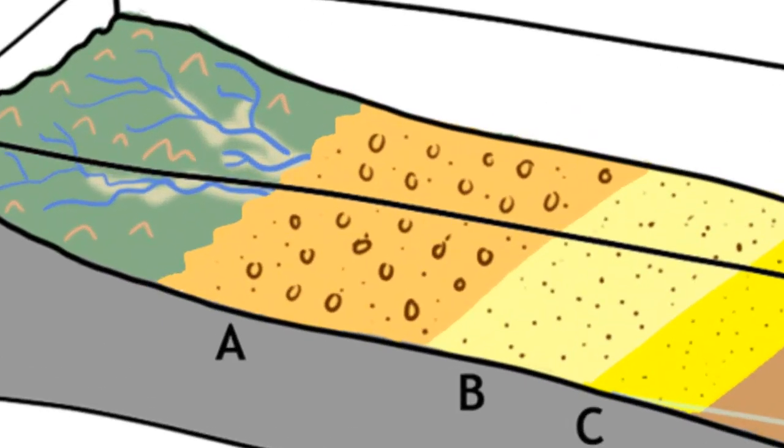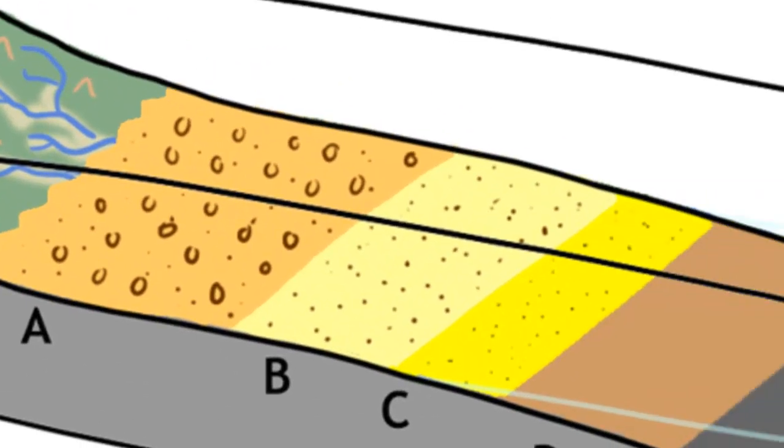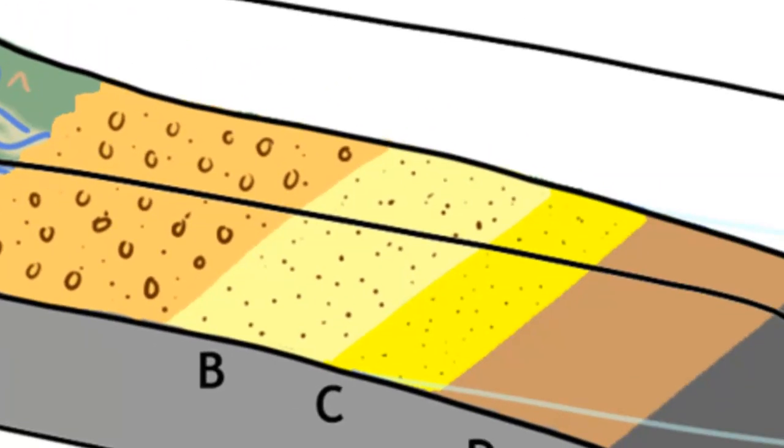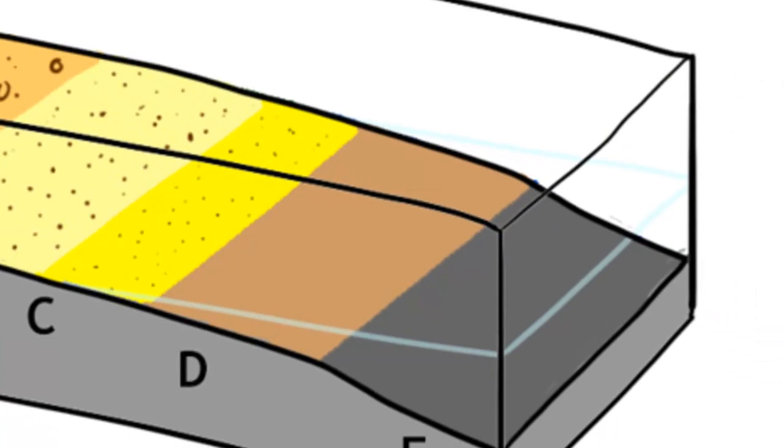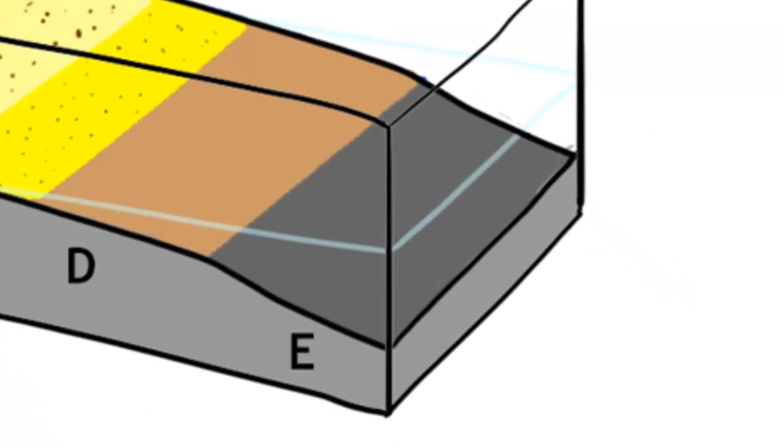We've got kind of a gravel facies at the most upstream end of the system, then coarse sand at B, finer sand at C, and then offshore we've got silt for D and then clay at location E, furthest offshore.